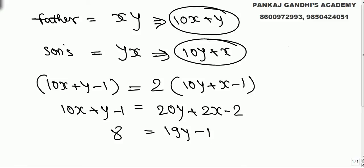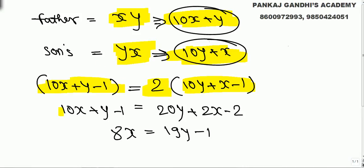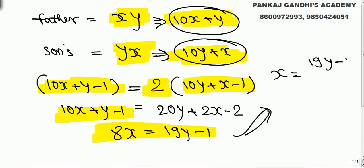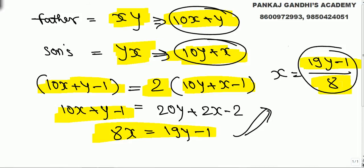Quick check: father's age XY is 10x + y, son's age YX is 10y + x. One year back, father's age was twice son's age. Solving it, we get this equation. Now x and y are digits, so x = (19y - 1) / 8. X has to equal (19y - 1) / 8.